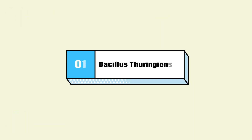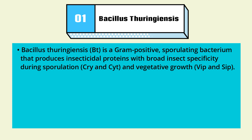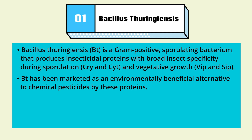Bacillus thuringiensis is a gram-positive sporulating bacterium that produces insecticidal proteins with broad insect specificity during sporulation. It produces Cry and Cyt proteins during sporulation, and Vip and Sip proteins during vegetative growth. Bt has been marketed as an environmentally beneficial alternative to chemical pesticides by means of these proteins.